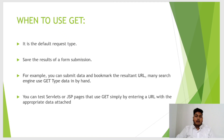Now we will look at the GET method and when to use it. GET is the default request method. It saves the result in form submission — for example, you can submit data and bookmark the resultant URL. Many search engines use the GET data type. You can test a server or JSP page that uses GET simply by entering a URL with the appropriate data attached.